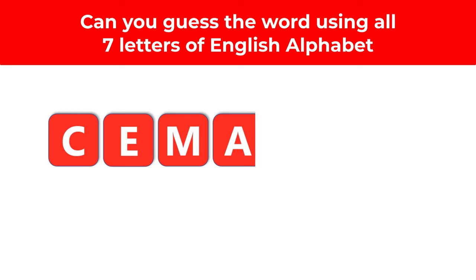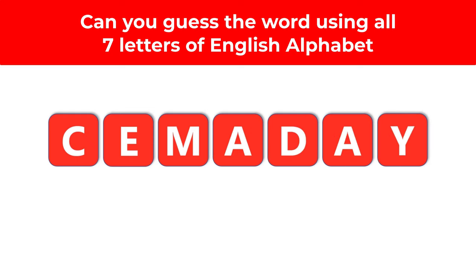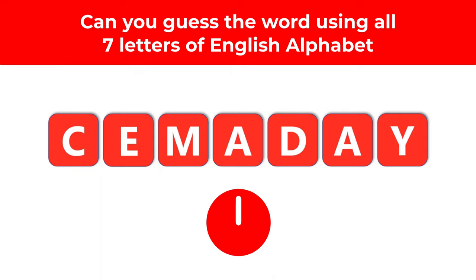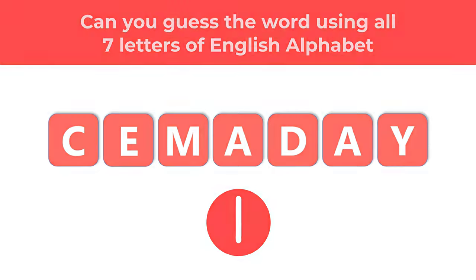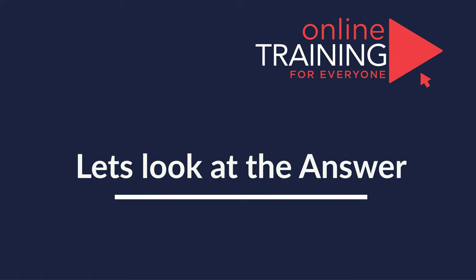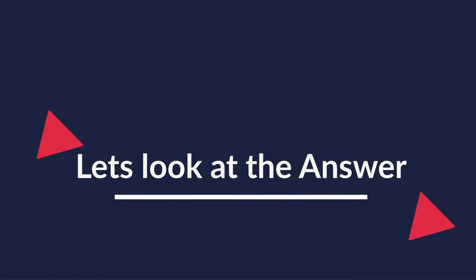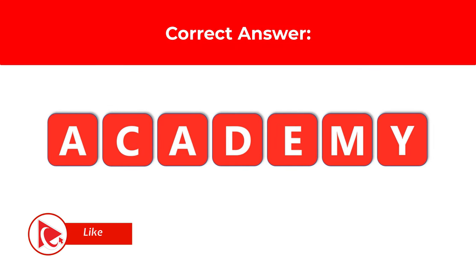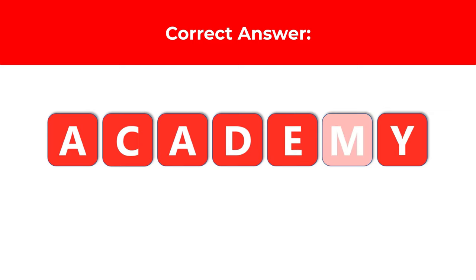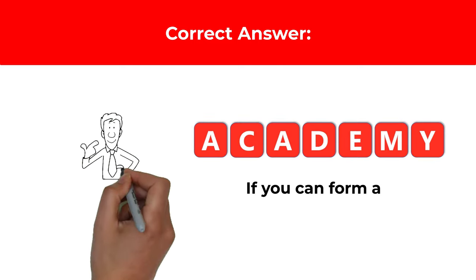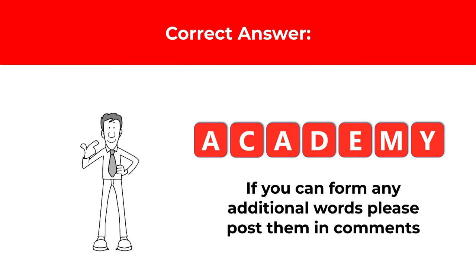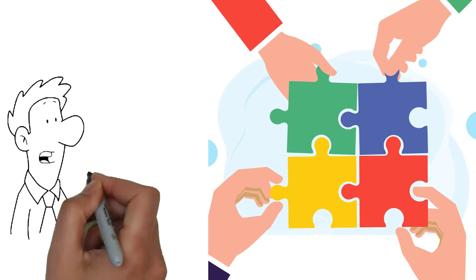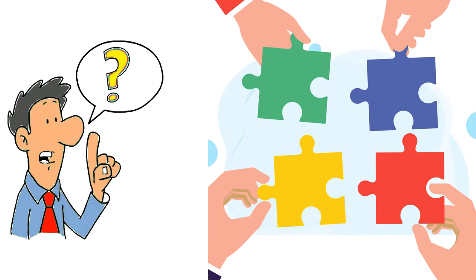Here's a tricky problem frequently seen on the test. You're presented with seven letters — C, E, M, A, D, A, and Y — and need to guess the word using all of them. Give yourself 15 to 20 seconds. The correct answer is ACADEMY, spelled A-C-A-D-E-M-Y. If you found other valid words, post them in the comments. Practice crosswords and Scrabble to improve.